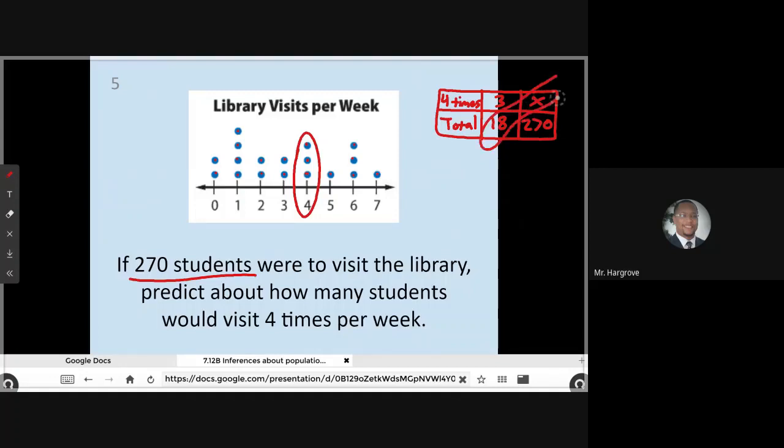That's going to give me 18x equals 270 times 3, where 18x equals 810. I'm then going to divide both sides by 18. And that's going to leave me with x equals 45. So that would be my prediction. If 270 students were to visit the library, we would predict about 45 would say they visit four times per week based on the information that they gave us in this problem.